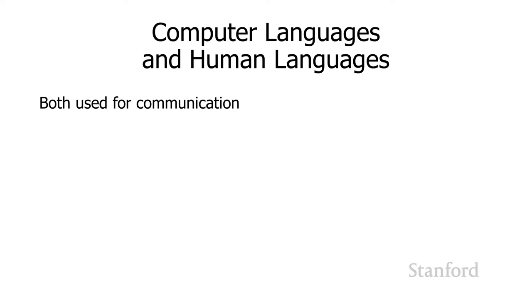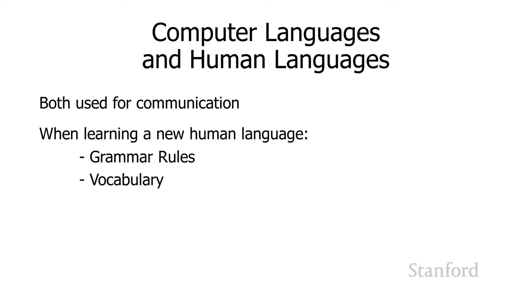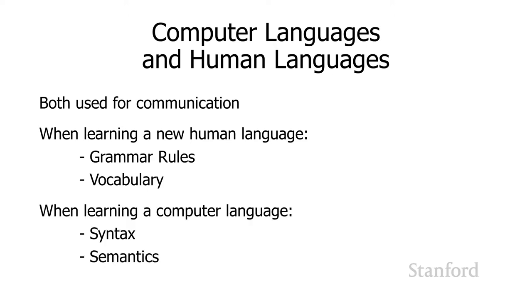When we're learning a new human language, there are two different things we need to learn: the grammar rules for that language, and vocabulary. The same thing happens in computer languages. We refer to the grammar rules as syntax, and we think about vocabulary as being similar to the computer science concept of semantics.